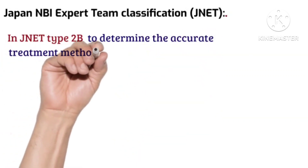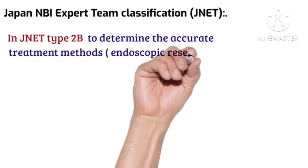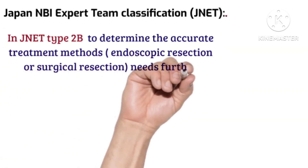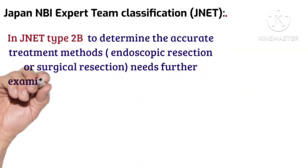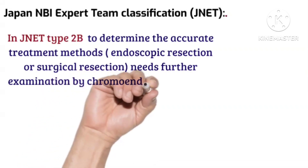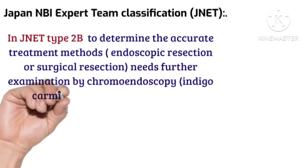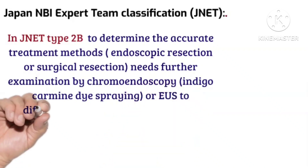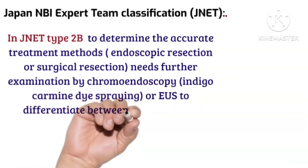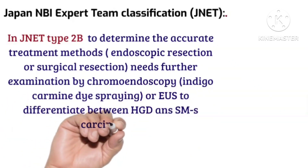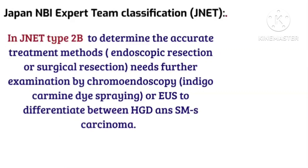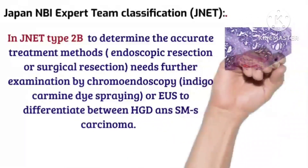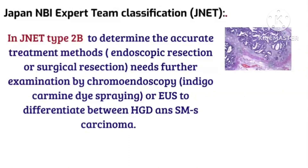For JNET Type 2B, to determine the accurate treatment method — either endoscopic resection or surgical resection — further examination is needed using chromoendoscopy with indigo carmine dye spraying, or endoscopic ultrasound, to differentiate between high-grade dysplasia and superficial submucosal carcinoma.